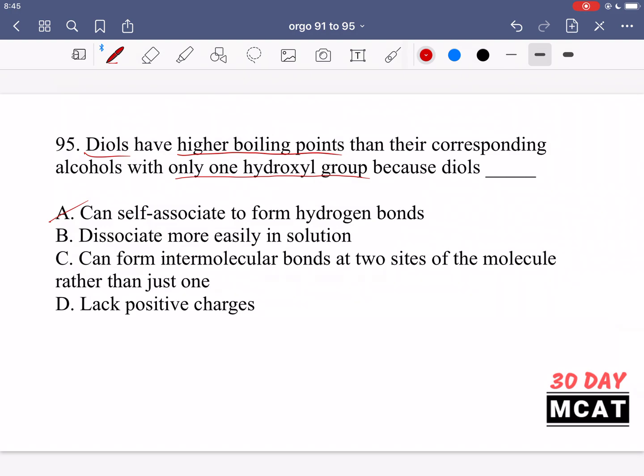B says it can dissociate more easily in solution. No, alcohols don't dissociate well in solution. We need some basic compound to make them be deprotonated. There's nothing about a diol that makes it more likely to dissociate. C says it can form intermolecular bonds at two sites of the molecule rather than just one. Yes, that's the main thing. Remember, if you're talking about boiling point, we're talking about intermolecular bonds.